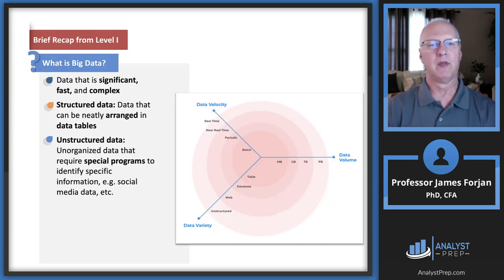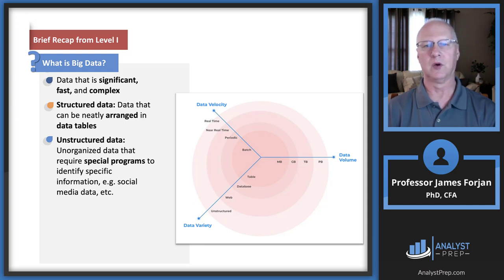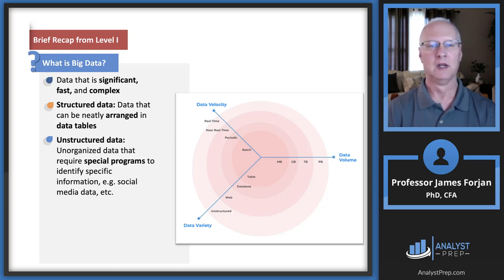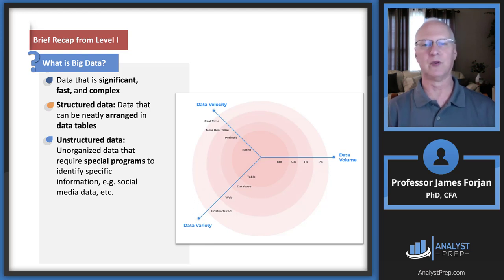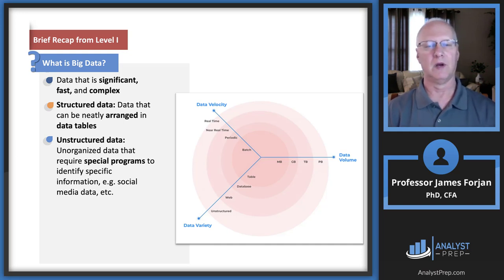You probably remember that back in Level 1 there was just one reading on big data. Here's a quick summary: data is significant, fast, and complex. There are three V's: data volume means quantity of data, data variety means you have a bunch of different sources, and data velocity means the speed with which that data is created. This reading adds a fourth V — veracity — which is the credibility and reliability of data.